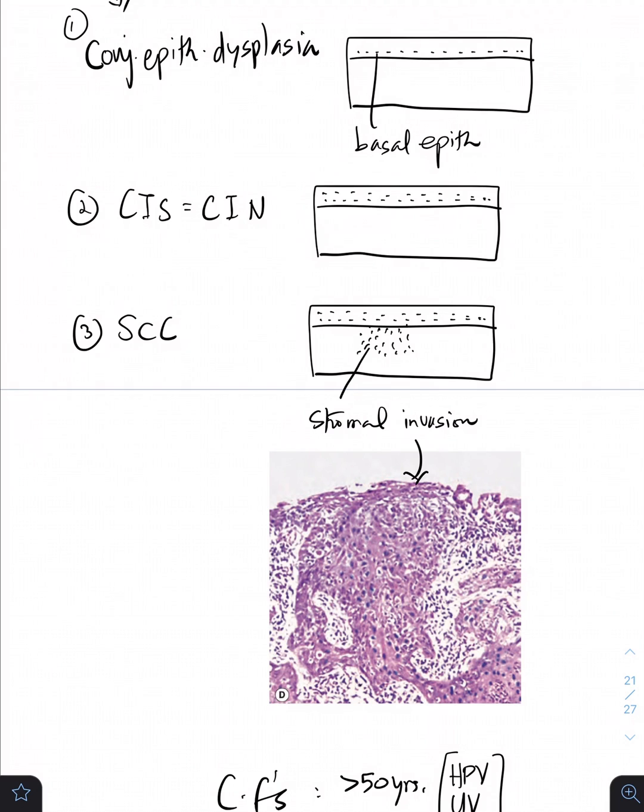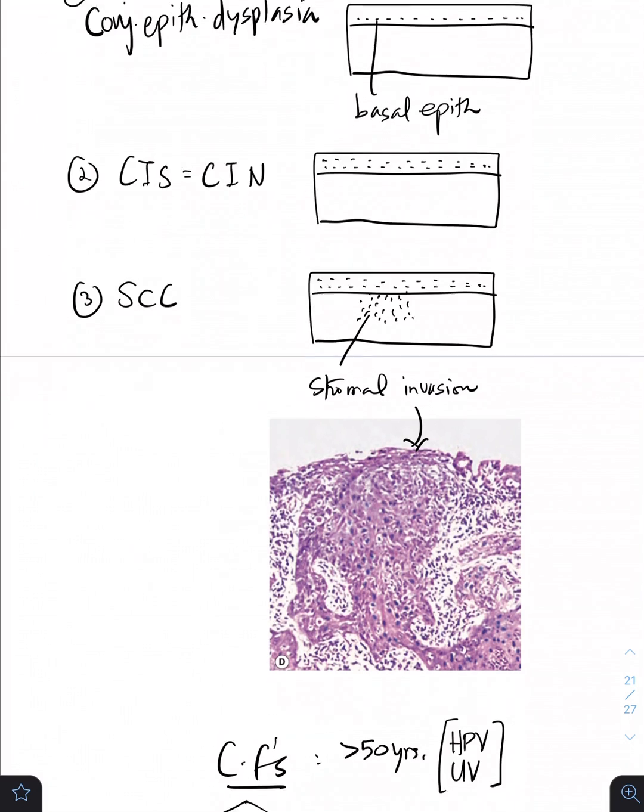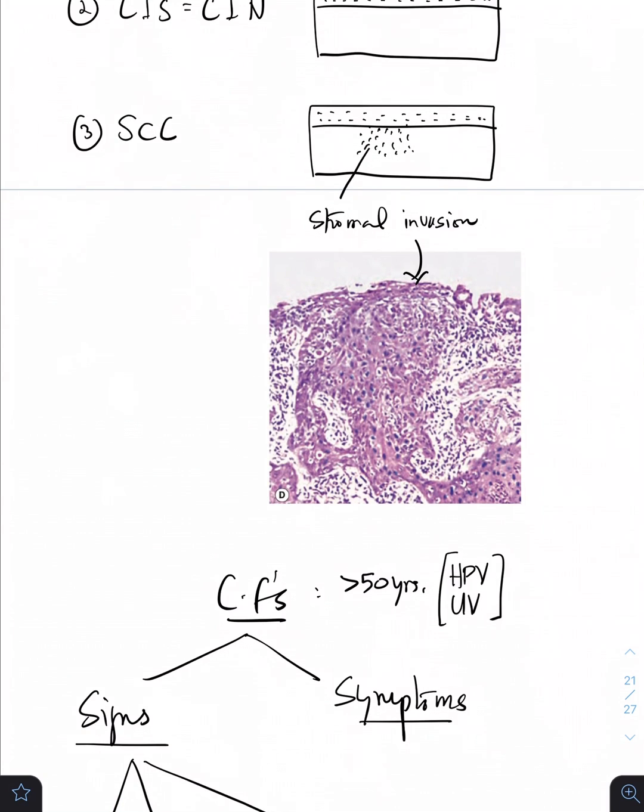What are clinical features as far as OSSN is concerned? More than 50 years. The implied associations or causative agents are going to be human papilloma virus, UV radiations, and some people say that abnormal limbal stem cell abnormalities can also cause or bring out this OSSN in these patients.